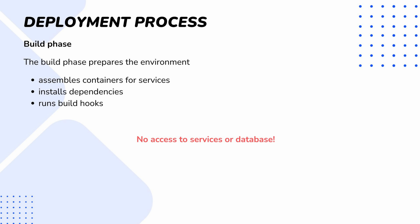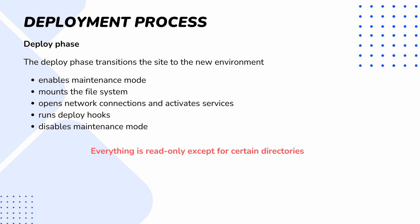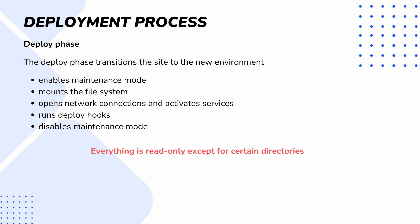The build phase depends only on the resources limited to the environment. The next phase is the deploy phase. It replaces the old version of the environment with the new version that was built in the previous build phase. In the deploy phase, Adobe Commerce Cloud enables maintenance mode first, which holds all incoming requests so that all the data migrations and services can be safely migrated. Then it mounts the file system. Everything in the build process is read-only and only directories defined in the mount section are writable, meaning that on each deployment Adobe Commerce Cloud must make sure that all writable files and directories are correctly copied.